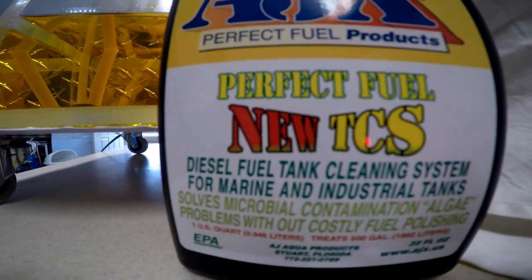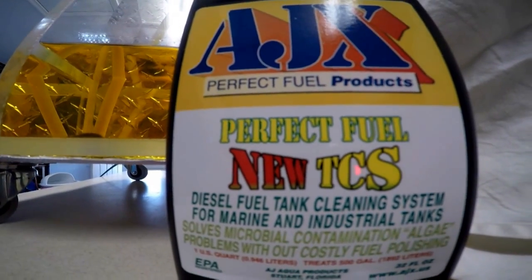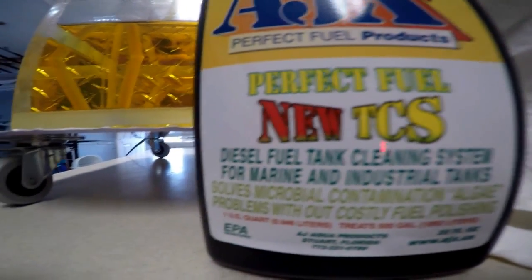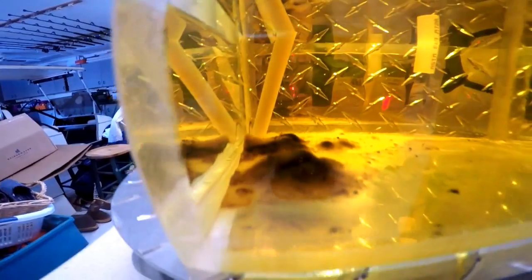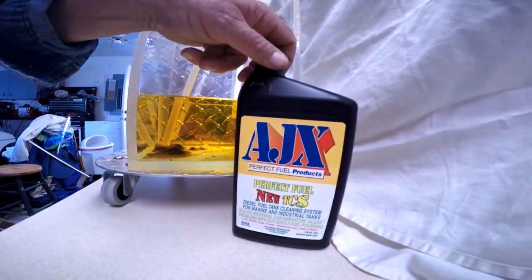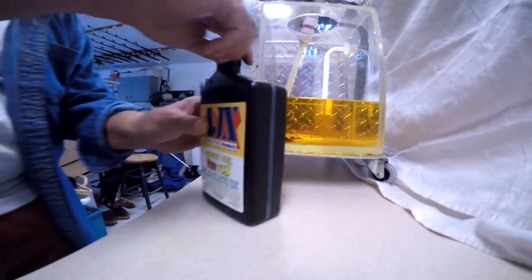Now we're going to put the AJX Perfect Fuel Chemical into it. It's a diesel fuel tank cleaning system. So you can visualize this as you're taking your boat. We're going to take the AJX and we're going to open it up and we're going to put some in.